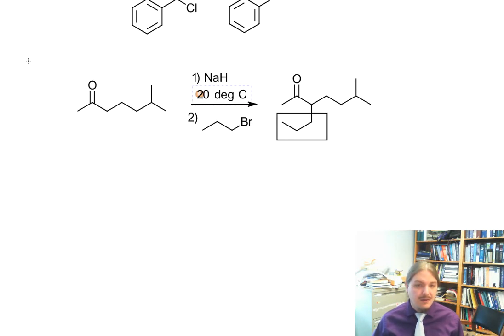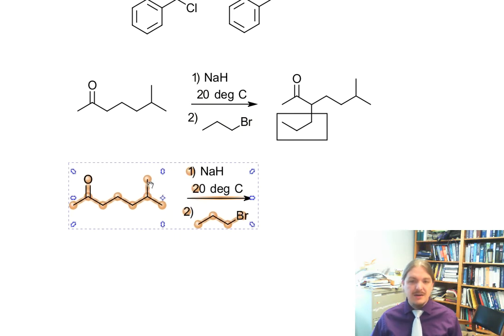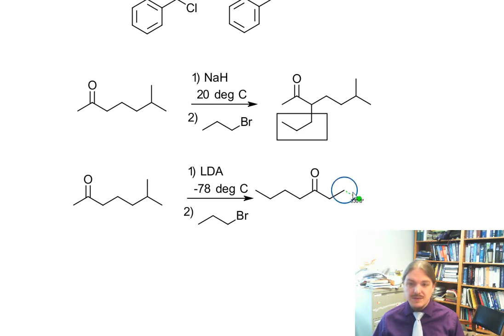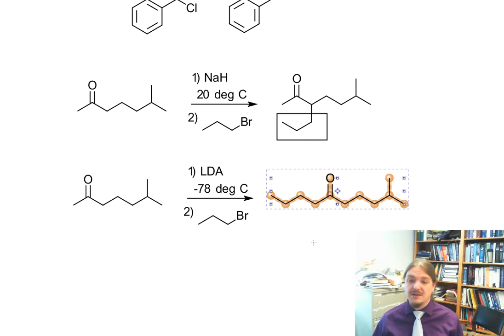If we had used lithium diisopropylamide at minus 78 degrees Celsius instead of sodium hydride at 20 degrees Celsius, we would have gotten alkylation at the less substituted position. With three extra carbons here, we'd get this ketone as the major product instead.